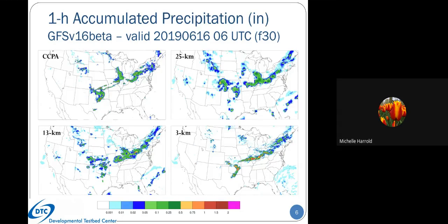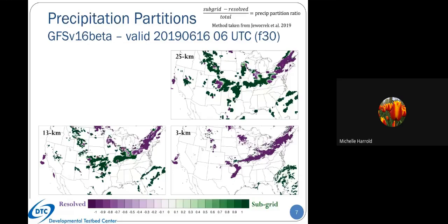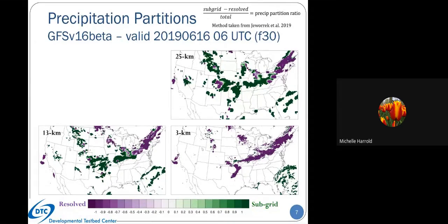Now focusing on one-hour accumulated precipitation, using CCPA as truth. These are precipitation partitions—the method was taken from a 2019 paper. On a grid-cell-by-grid-cell basis, you can see whether precipitation is mostly coming from the resolved or microphysics scheme, or the subgrid partition from the convective scheme. The purples represent the resolved, and transitioning to green indicates more influence from the subgrid scale.